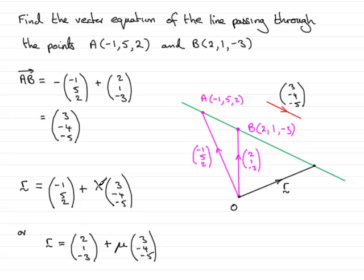So, by varying lambda or mu in any of these equations, we would get to any point on this line. So, any of these answers would do. So, hopefully, you understand how we can find the vector equation of a line when you know that the line passes through two given points.